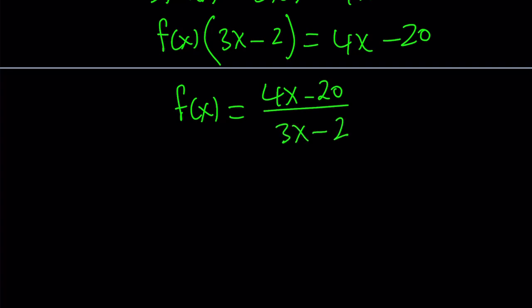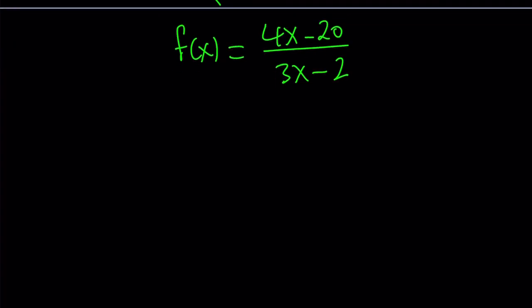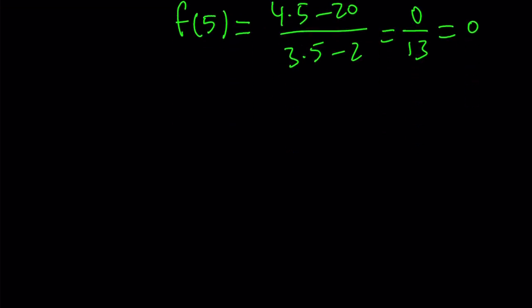And this is a rational function, isn't it? So how do you find f of 5 from here? The answer is easy. You replace x with 5. If you do it, you're going to get 4 times 5 minus 20 divided by 3 times 5 minus 2, which is 0 divided by 13, which is equal to 0. So f of 5 equals 0.